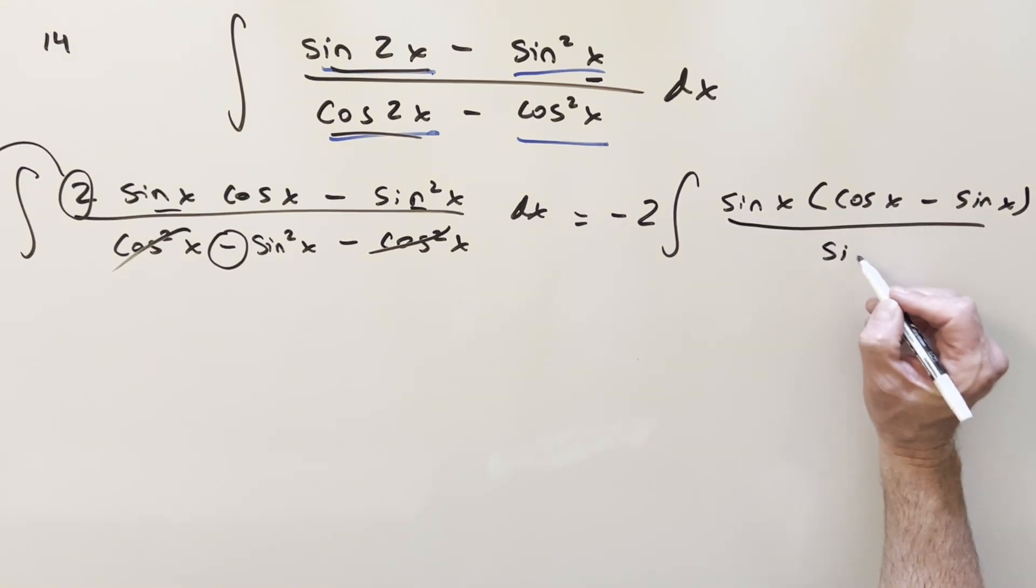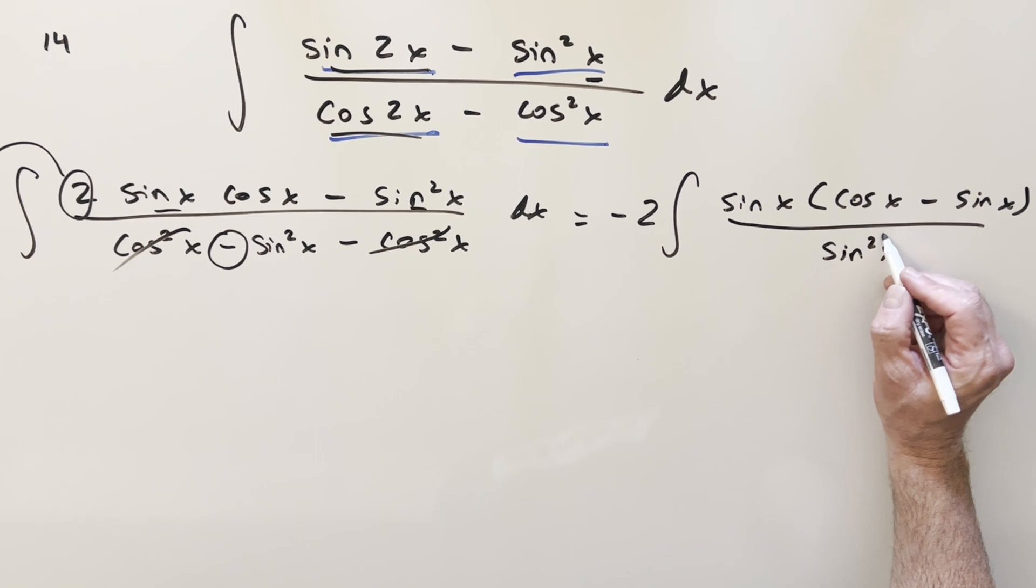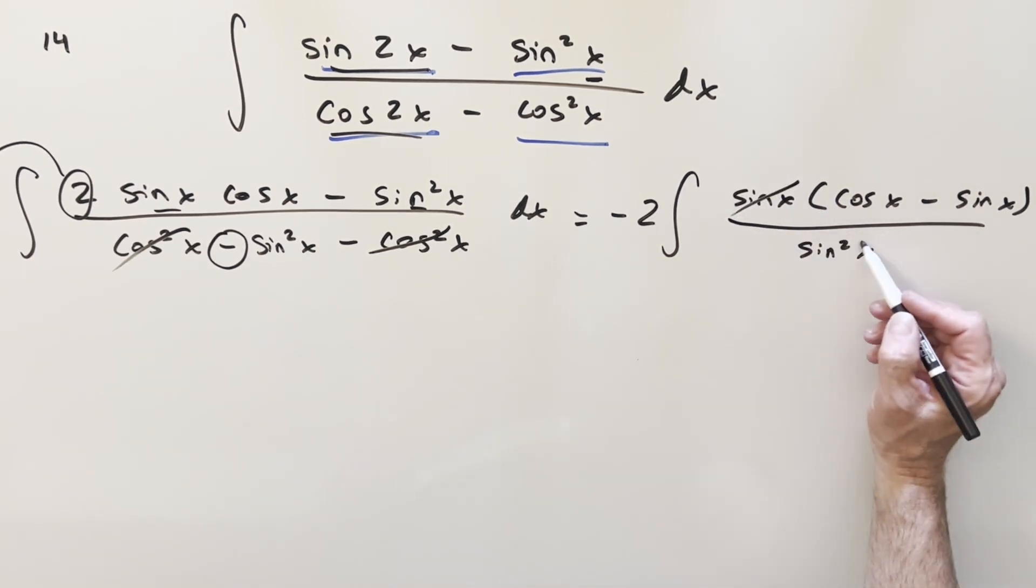And then that's going to give me some cancellation because we just have now sine squared x in the denominator. We'll cancel one of these with one of these. Then I can just cancel one of these with one of these from the denominator.